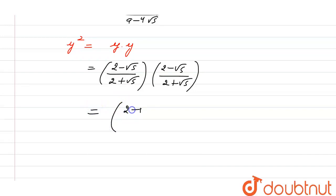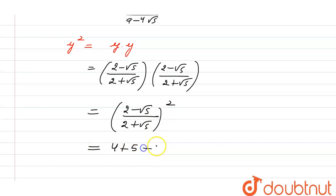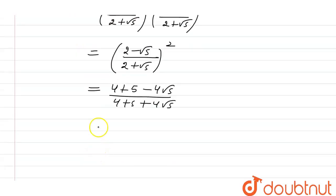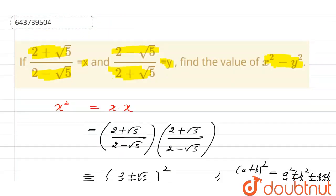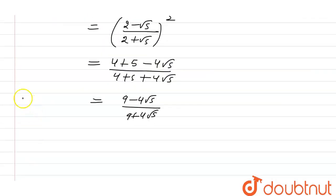We use the formula (a - b)² = a² + b² - 2ab for the numerator and (a + b)² for the denominator. This gives us (9 - 4√5) divided by (9 + 4√5). So this is the value of y².